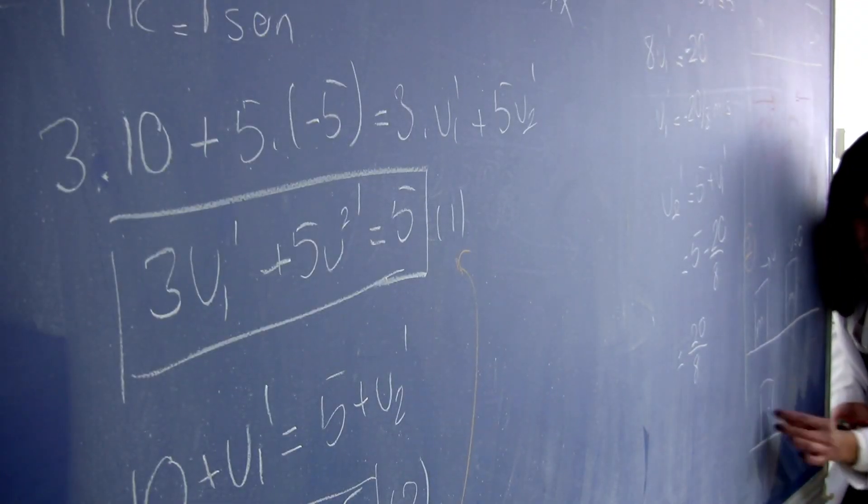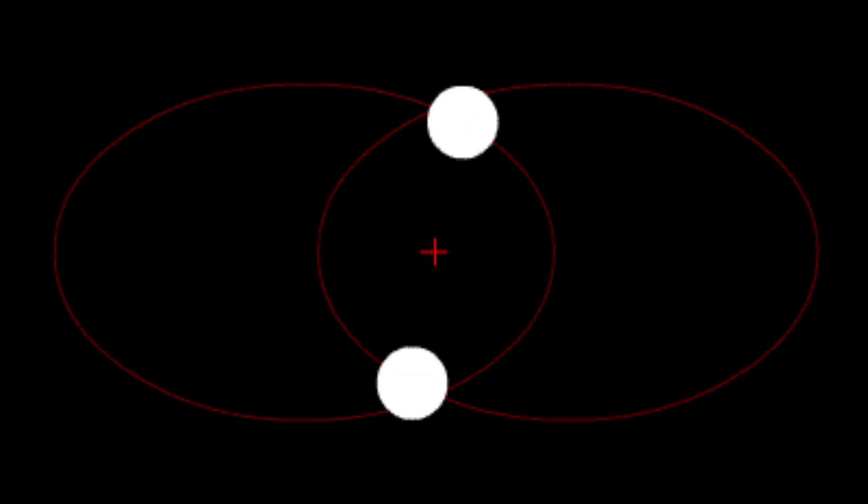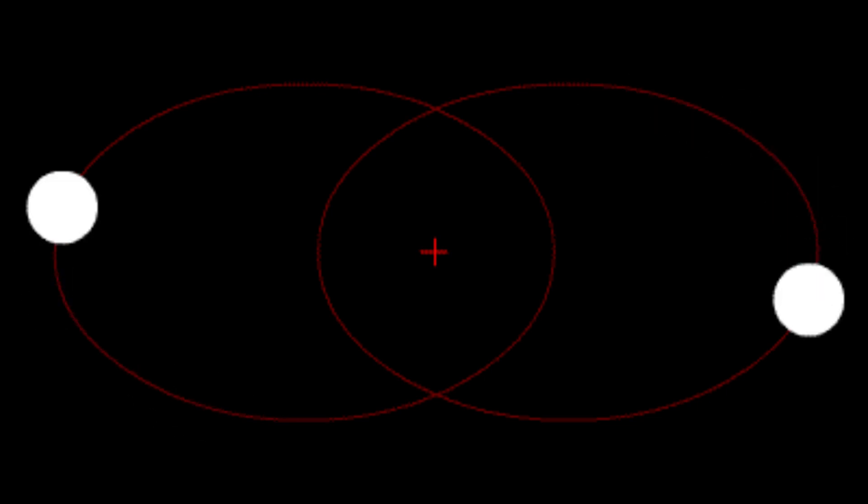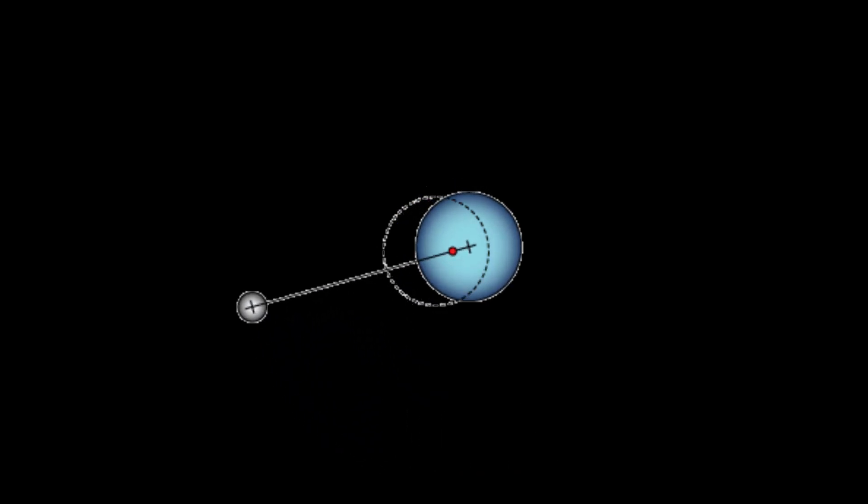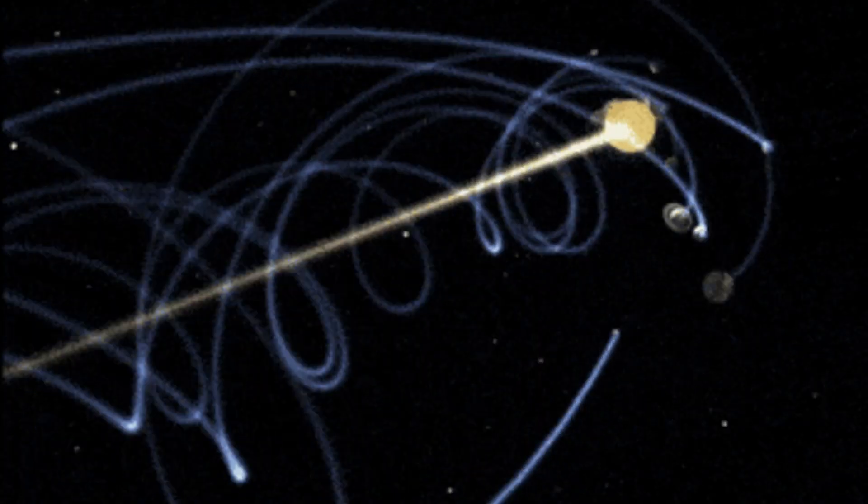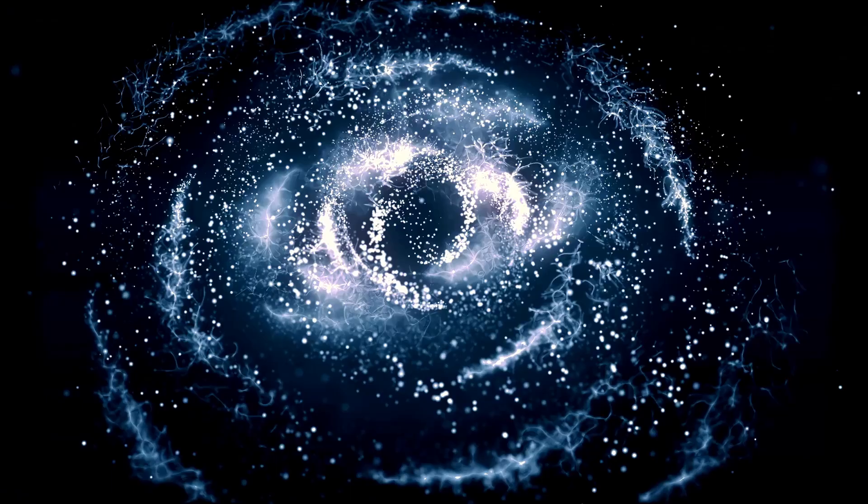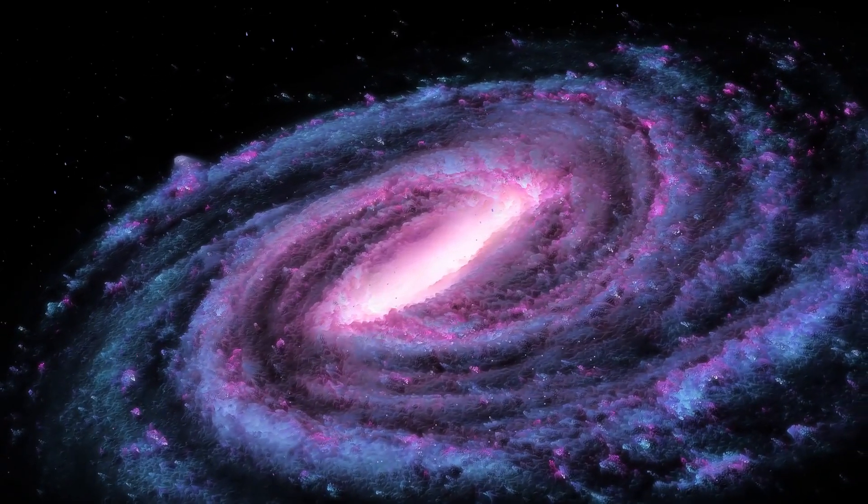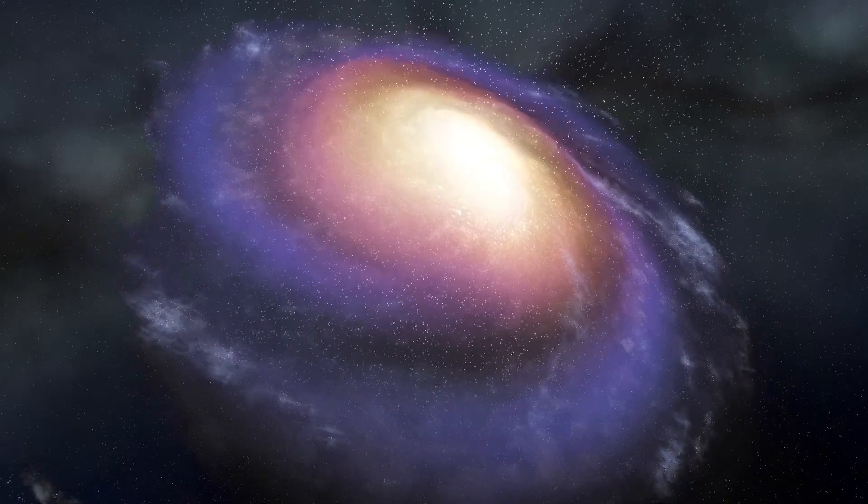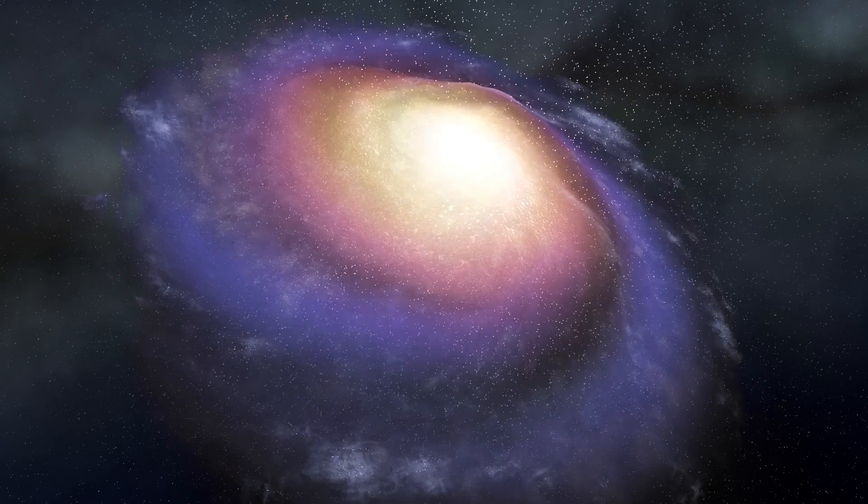One of the first things you might learn in a physics class is that gravity is an attractive force between two objects, whose strength is proportional to each of their masses. Gravity keeps planets locked in orbit around the Sun, it keeps stars grouped together in the Milky Way, and it even attracts galaxies together to form galaxy clusters and superclusters.